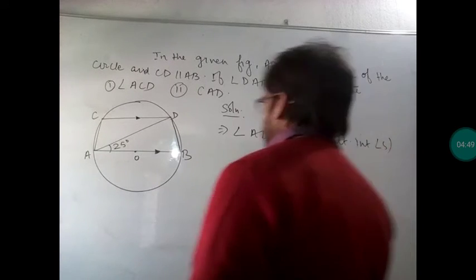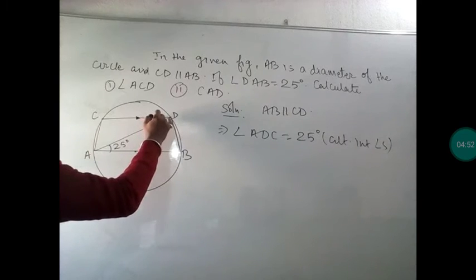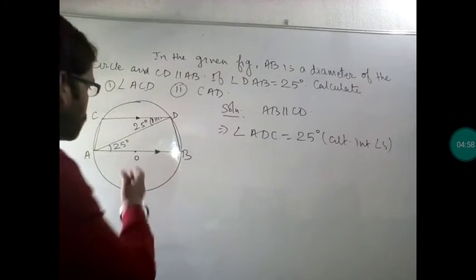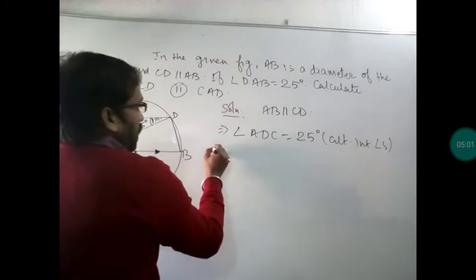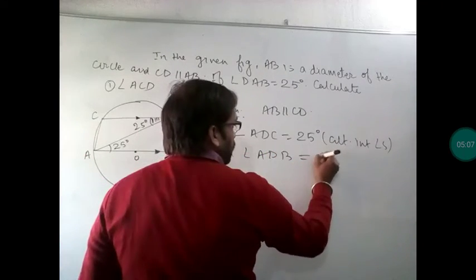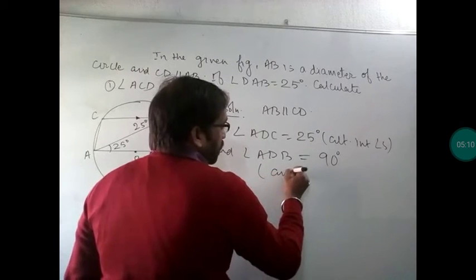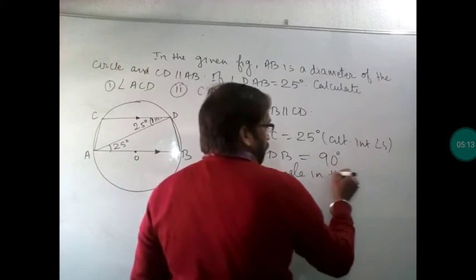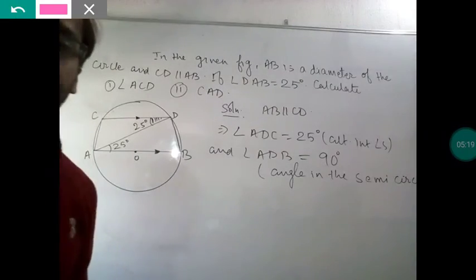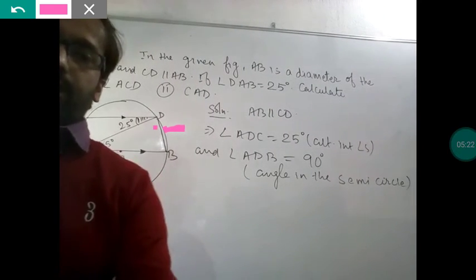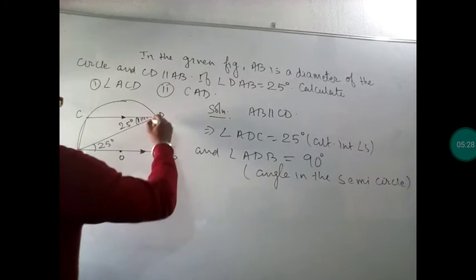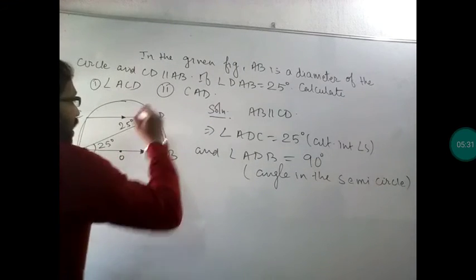Given that AB is parallel to CD and angle DAB is 25 degrees, by alternate interior angles, angle ADC is also 25 degrees. Now, angle ADB is 90 degrees — because the angle in a semicircle is 90 degrees. We just discussed this concept in the slides. So this angle here is 90 degrees.